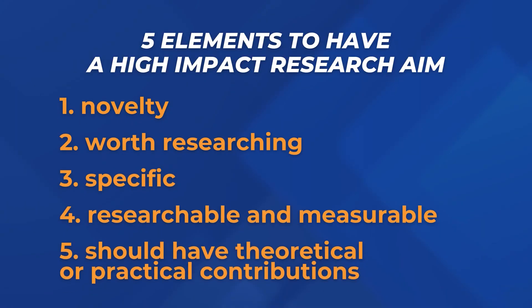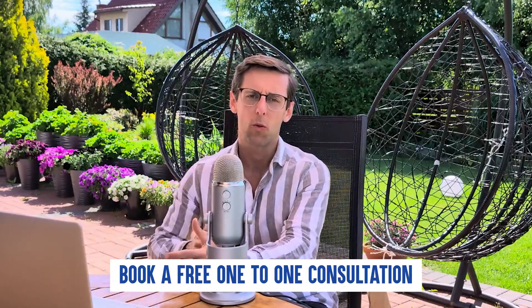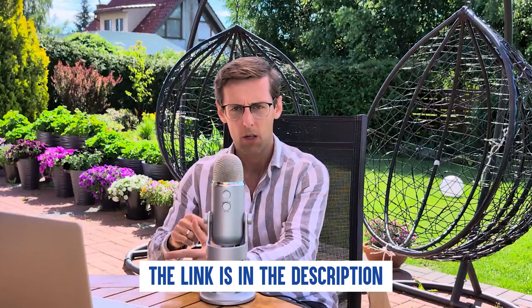These are the five elements you need to get right in order to have a high-impact aim that increases your chances of publication in top journals: novelty, importance, specificity, being researchable and measurable, and making theoretical or practical contributions. If you've enjoyed this video and want to work with me or my team, book a free one-to-one consultation using the link below — we'll analyze your challenges, your goals, and build a plan to help you become a published researcher much faster.